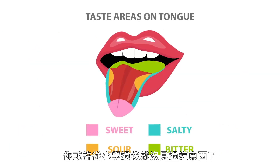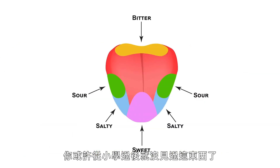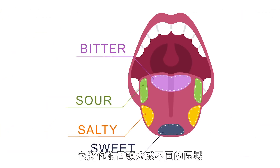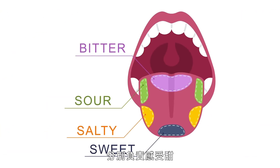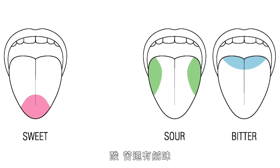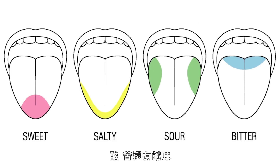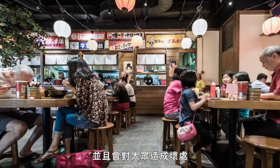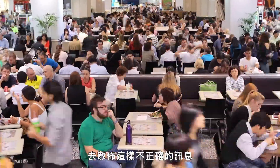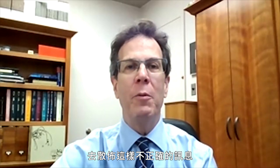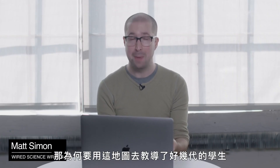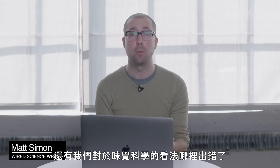Remember this tongue map? You probably haven't seen it since your elementary school days, but it's been around for decades. It divides your tongue into distinct sections responsible for interpreting sweet, sour, bitter, and salty tastes. It's just wrong, and it's doing a disservice to the whole population by disseminating this incorrect information. So why have generations of students been taught this map, and what else are we getting wrong about the science of taste?